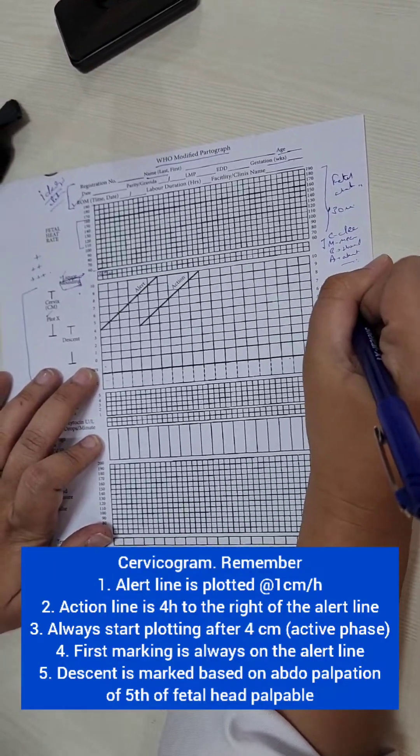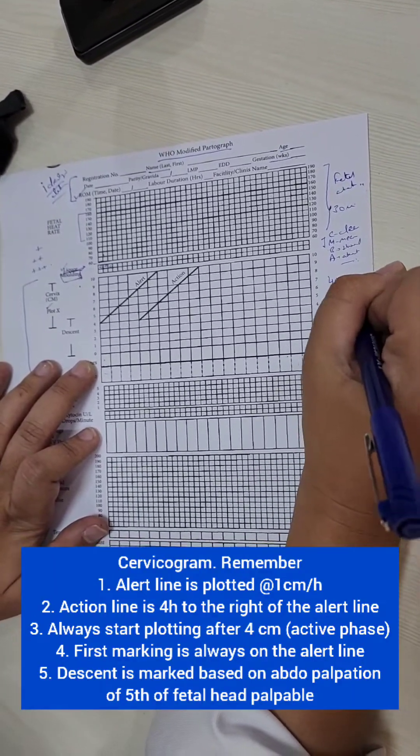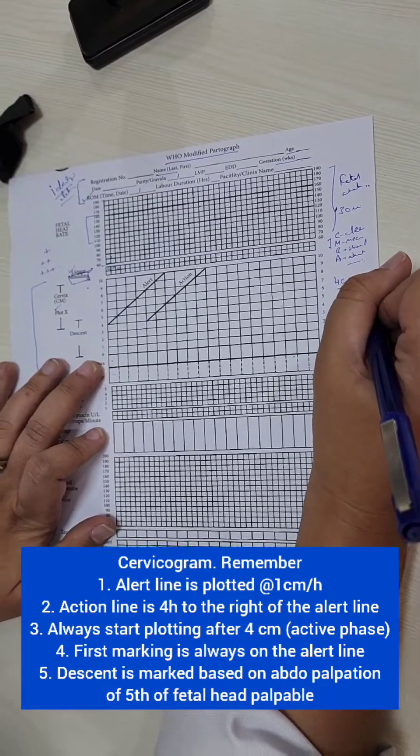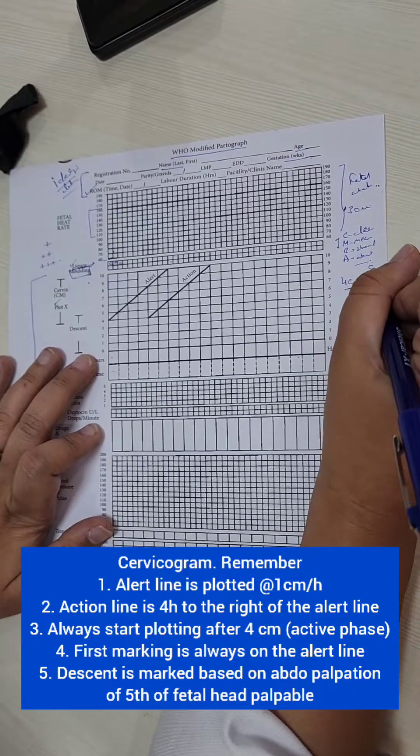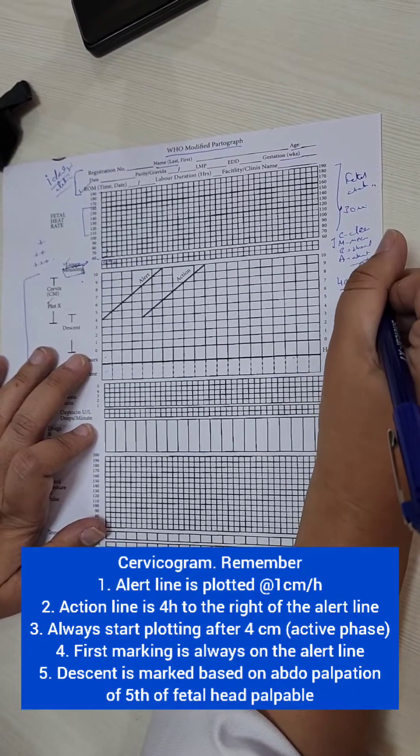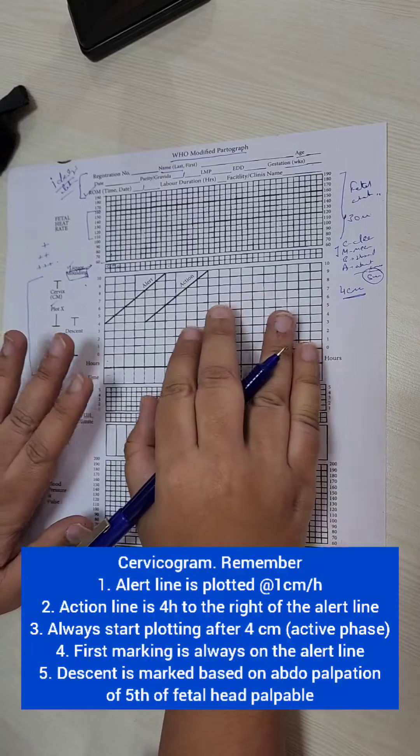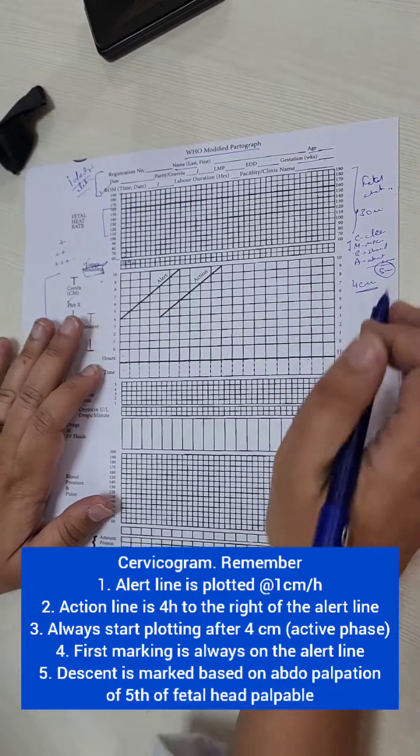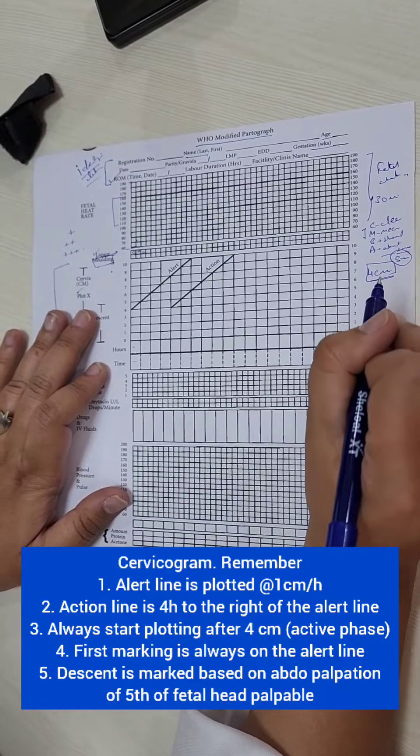Now when a patient comes to us, when we do a vaginal examination, we start plotting the cervicogram. Remember two things, we plot it after 4 centimeters dilatation. This is a modified partograph. The newer partograph, the labor care guide now says 5 centimeters is the new active phase as per the WHO. But remember we are following, many places still are following the old, the modified partograph. So here we take active phase of labor as 4 centimeters.